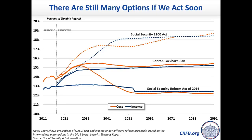This blue dotted line at the top assumes two things happen on revenue: one is they eliminate the cap, and the other is they raise the payroll tax rate very gradually by 2.4 percentage points — which, out of 12.4, is like a 20% increase in the tax rate. So the combination of eliminating the cap and raising the rate by that amount can fix Social Security.